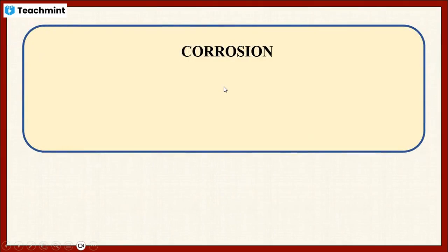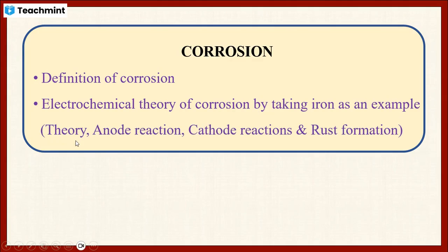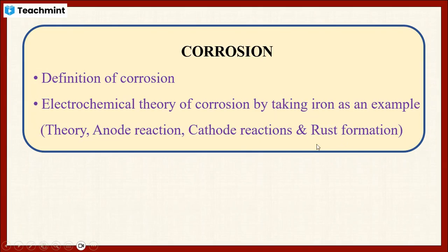So overall, we discussed about the definition of corrosion, that is the destruction or the deterioration of a metal. Then we also discussed about the electrochemical theory of corrosion by taking iron as an example. We discussed the theory, that corrosion takes place due to the formation of tiny galvanic cells. Then we discussed the cathodic as well as anodic reactions: in the anodic reaction, oxidation takes place, and in the cathodic reaction, reduction takes place. And finally, we saw rust formation.